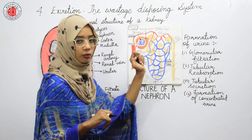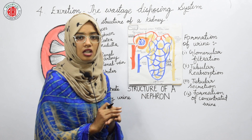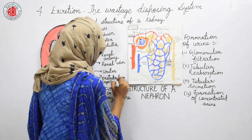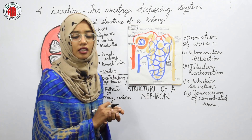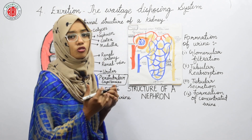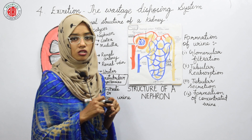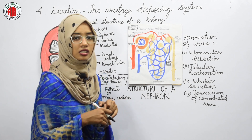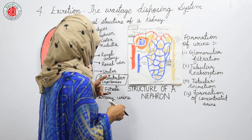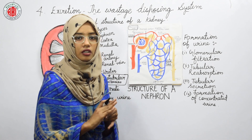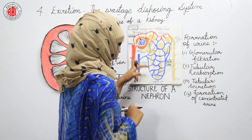When the filtrate reaches the proximal convoluted tubule, we can see capillaries surrounding it called peritubular capillaries. These peritubular capillaries are responsible for the reabsorption of materials present in the filtrate — useful materials like glucose, potassium, sodium, magnesium ions, and other substances. In the proximal convoluted tubule, 75% of the filtrate is reabsorbed, and the remaining fluid passes on to the loop of Henle.